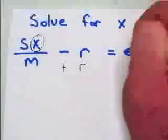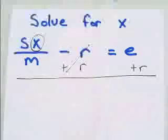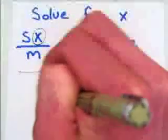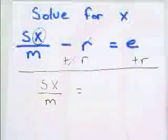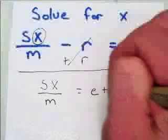Add r to both sides of my equation. Minus r plus r cross out. I'm left with sx over m equals, and again, e and r are not like terms, so I have to leave it as e plus r.